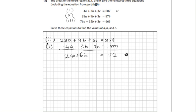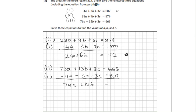Now we're going to combine the third with the first. Same procedure, we will subtract to cancel the c's, and this will give us an equation with two unknowns. -4a - 3b - 3c equals -807. Subtract everything and we will get 74a plus 12b plus 0 equals -1444.